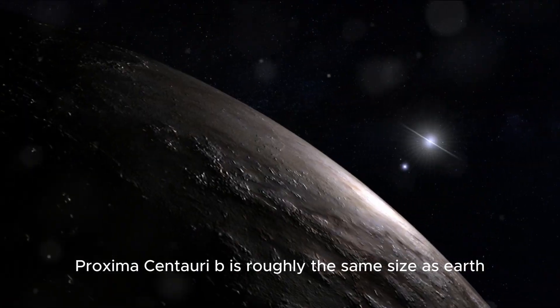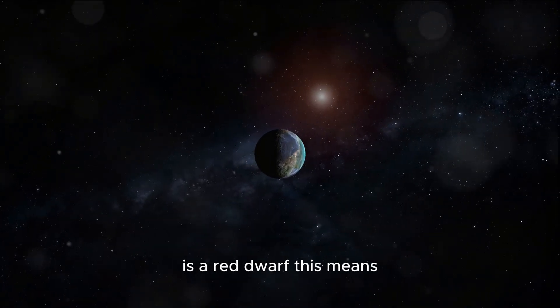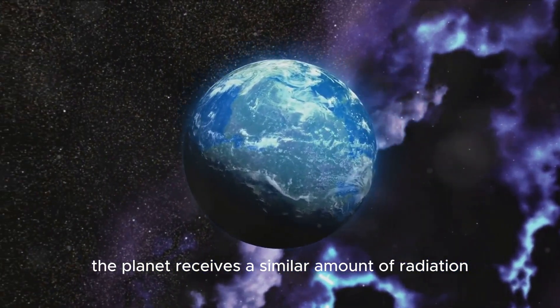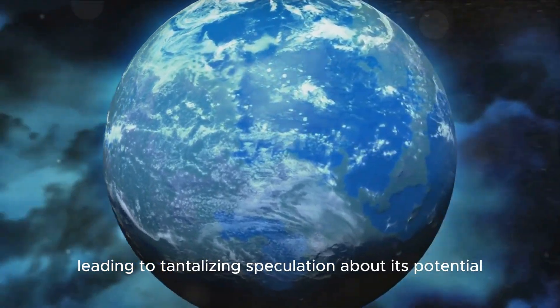Proxima Centauri b is roughly the same size as Earth, and its star, Proxima Centauri, is a red dwarf. This means the planet receives a similar amount of radiation as we do here on Earth, leading to tantalising speculation about its potential for life.